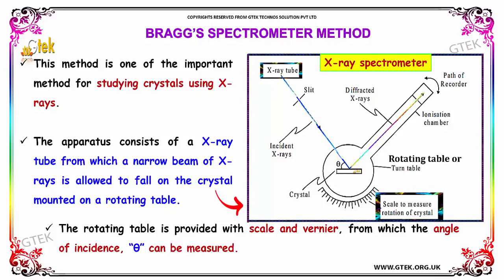Here is the crystal, you got the scale and this is the rotating table. Here is the ionization chamber, you are able to see the incident X-ray and the diffracted X-ray. Here is the path for recording. To streamline it, you got a slit here.